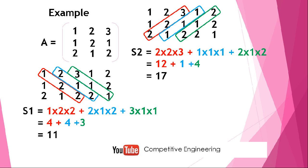The determinant is S1 minus S2—the sum on the left diagonal minus sum on the right diagonal. That is 11 minus 17, which equals -6. So the determinant of the matrix is -6. You can verify this method using the normal method.